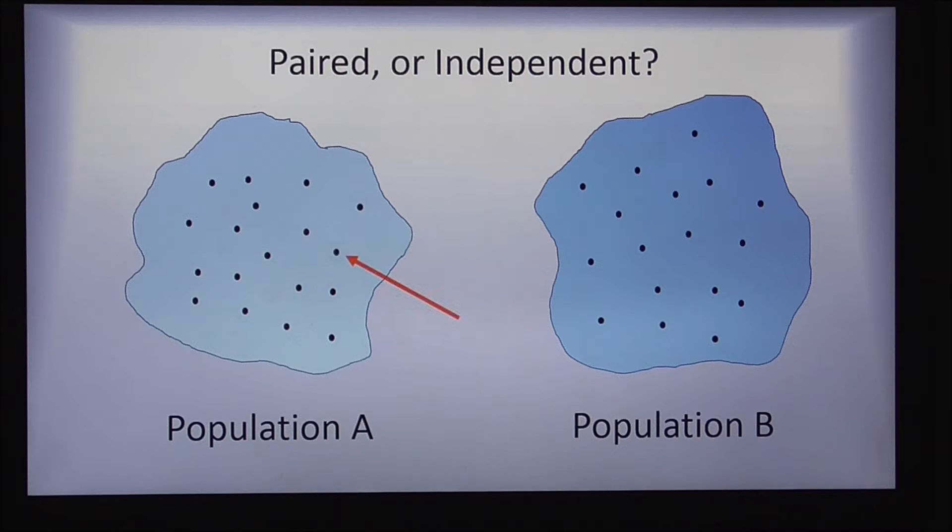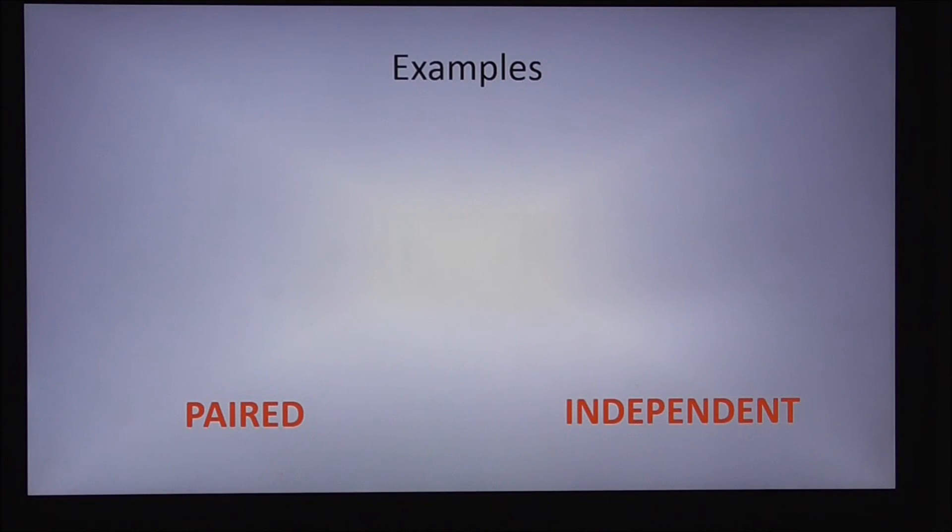For example, is this data point that comes from population A somehow related to this data point in population B, or are they independent of each other? Let's look at some examples. These examples aren't always going to be either paired or independent as listed here, but it gives you something to think about.